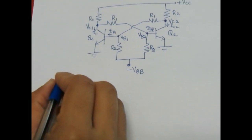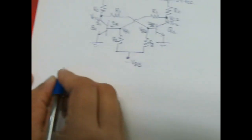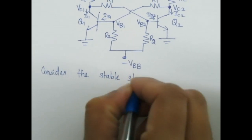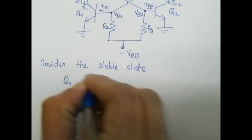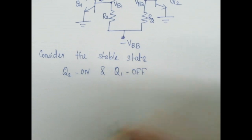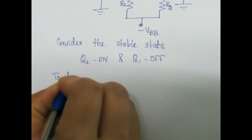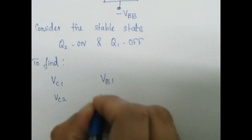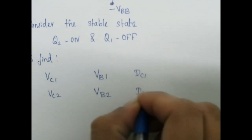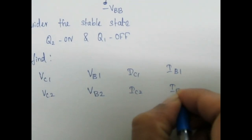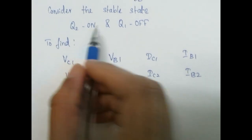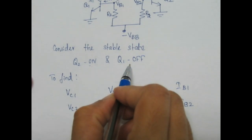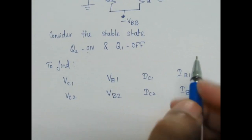We will see how to find the various stable state voltages and currents. Consider the stable state condition where Q2 is ON and Q1 is OFF. We have to find VC1, VC2, VB1, VB2, IC1, IC2, IB1, and IB2. If a transistor is ON, its base and collector voltages will be equal to the saturation voltages of the transistor. If the transistor is OFF, the base and collector currents will be equal to zero.